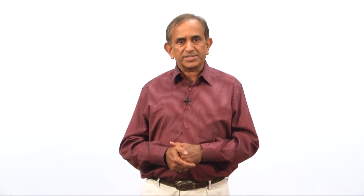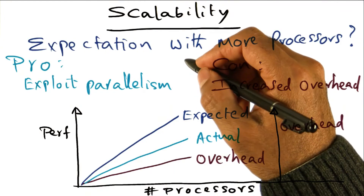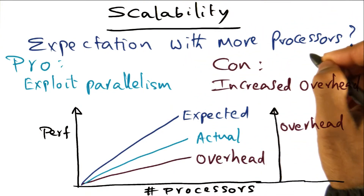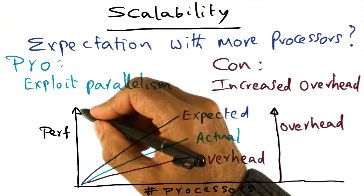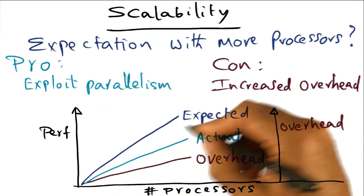But what about performance? Will the performance of a multi-threaded app scale up as we increase the number of processes in the cluster? From an application programmer's point of view, the expectation is that as you add more processors, you're going to get more performance. That's your expectation.